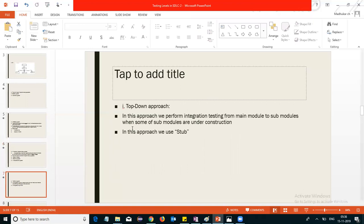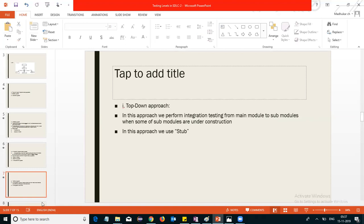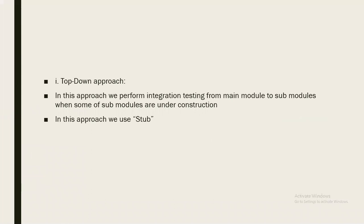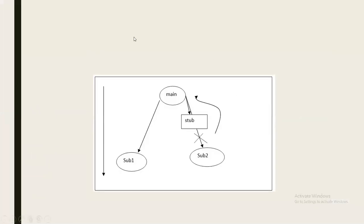The first one is the top-down approach. In this approach, we perform integration testing from the main module down to the sub modules. When some sub modules are under construction, we use a temporary program called a stub. Let's look at this diagrammatically to get a better idea.